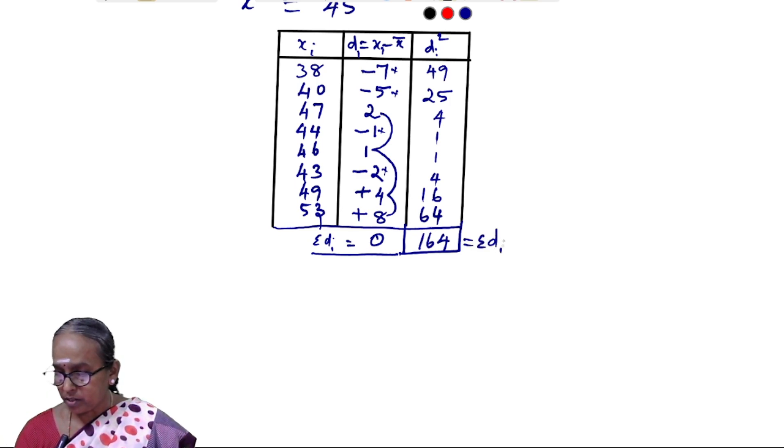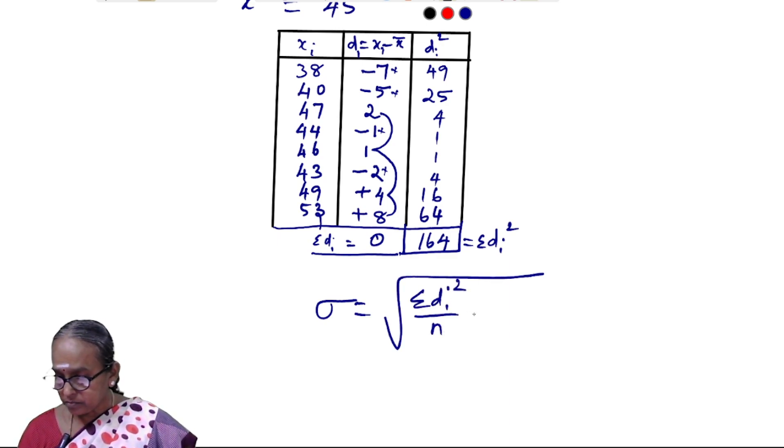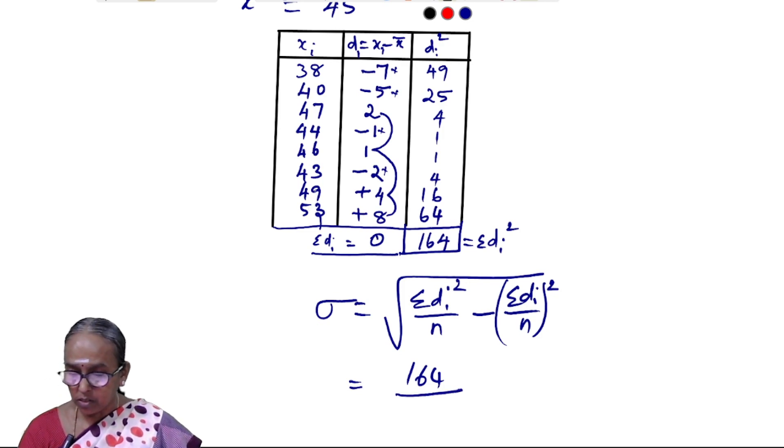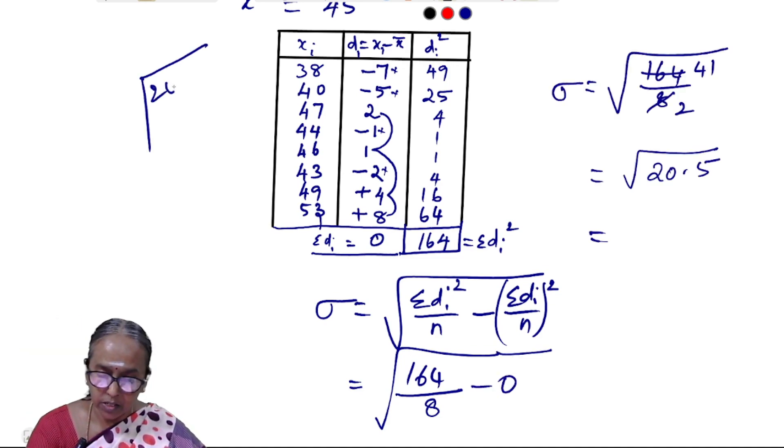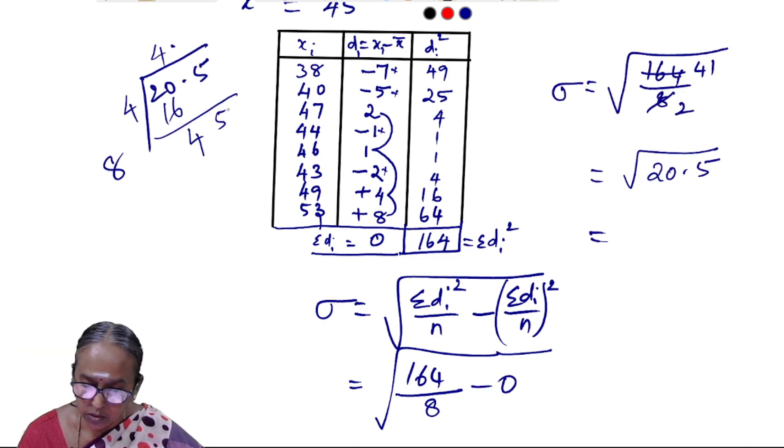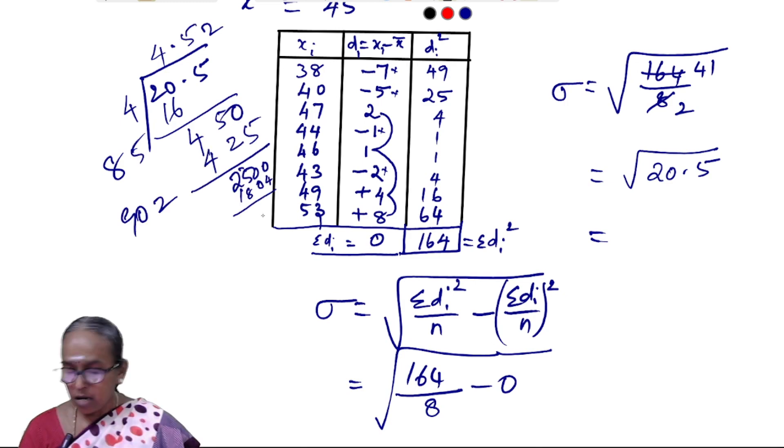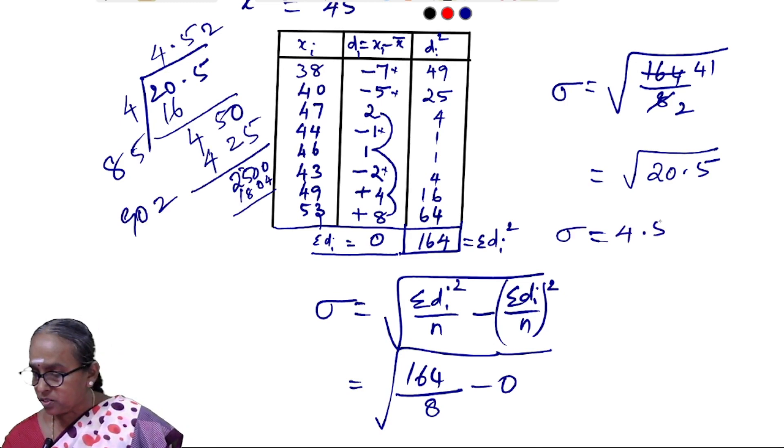Sigma equals square root of summation d squared divided by n, which equals square root of 164 divided by 8. This gives us approximately 4.52.